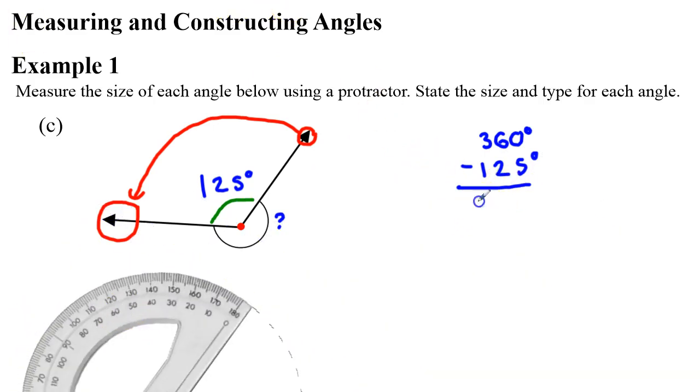So what do we get when we do that? We get 235 degrees. So our solution is 235 degrees for our reflex angle, and we also need to state its type, which we've just been talking about. It's a reflex angle.